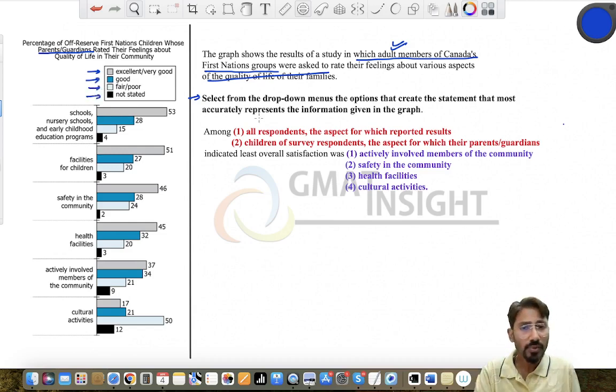Now let's just quickly read the question. Among—so these are the first two choices for the first drop-down menu, which I have numbered as one and two. Among all the respondents, the aspect for which reported results. And the second option is: among children of survey respondents.